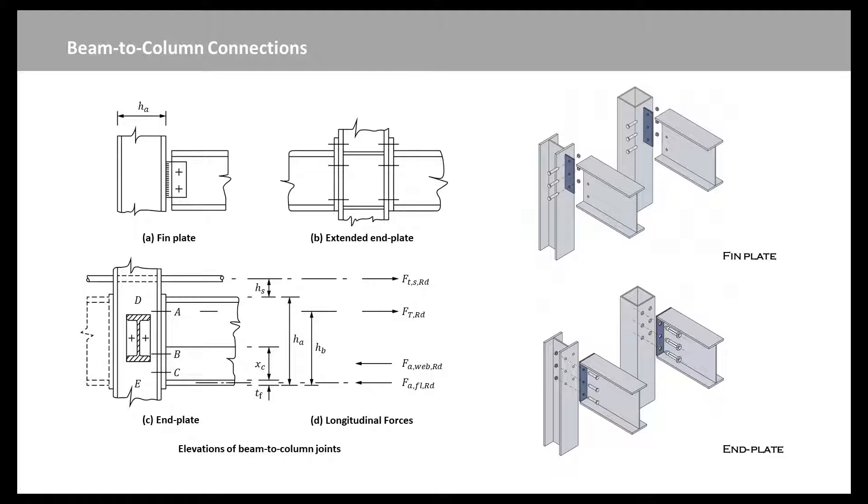Failure could occur by buckling of the column web at E, so this resistance is found next, allowing for the axial compression in the column. If buckling occurs, a stiffener can be added, but this is rarely necessary. The compressive force to cause yielding of the bottom flange, FAA flange RD, is then found. If it is less than the total tensile force, an area of web is assumed also to yield, such that we have this equation.